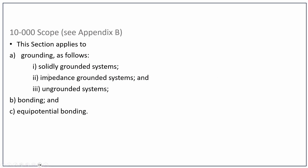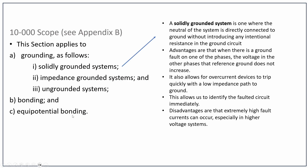Let's first talk about what a solidly grounded system is. A solidly grounded system would be something similar to the panel in your house — it's solidly grounded where the neutral of the system is directly connected to ground without introducing any intentional resistance into the ground circuit. With impedance grounded systems, they actually put a resistor or a coil in order to limit the fault currents. With a solidly grounded system, you have your grounding conductor going to a grounding electrode, or where you have a transformer, the secondary neutral is going to be bonded to ground.